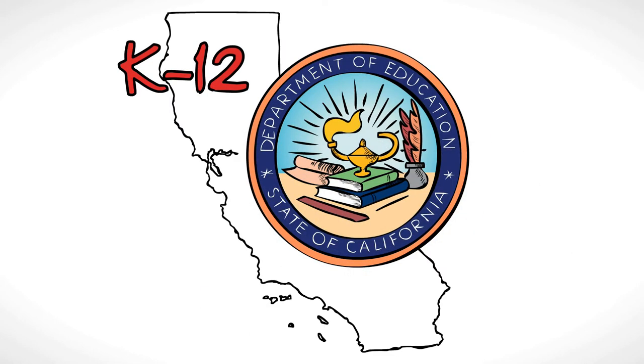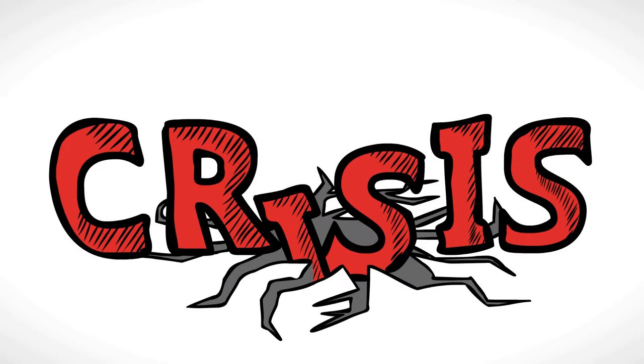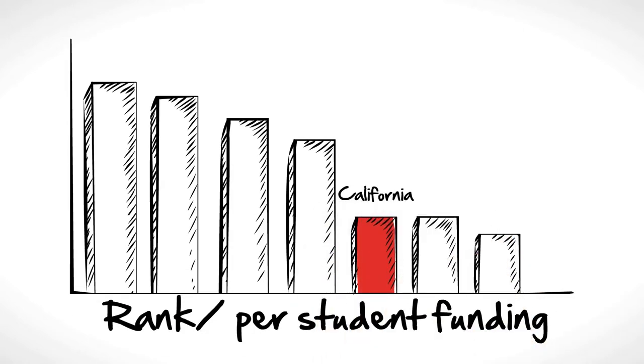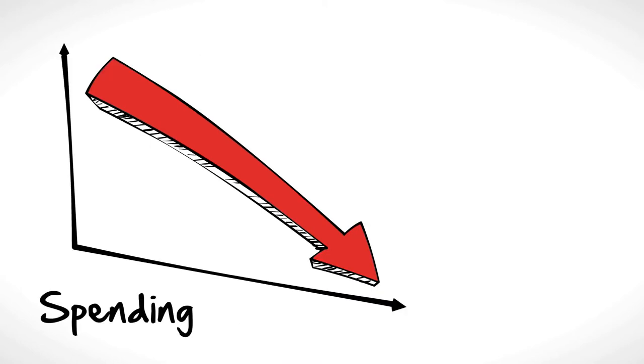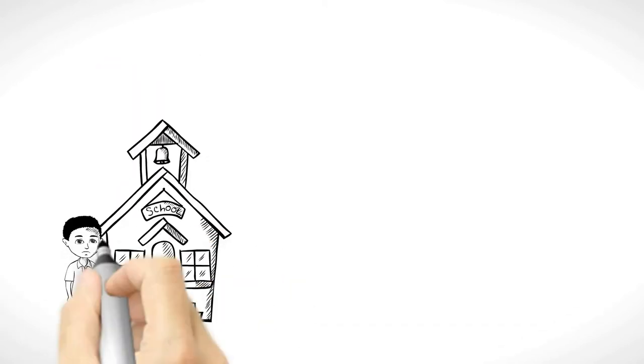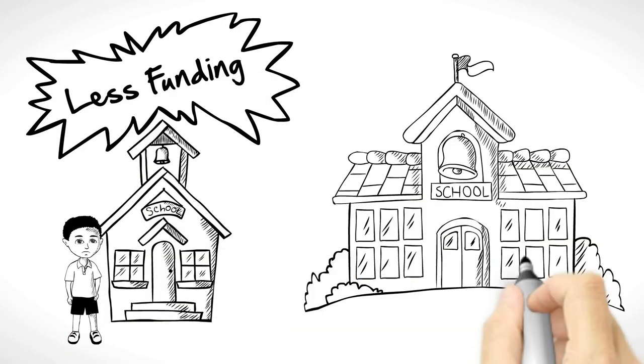K-12 education in California is in crisis. Not only does California rank near the bottom in per-student funding, and spending has been drastically cut, but students in low-income schools receive less funding than kids in well-to-do neighborhoods.